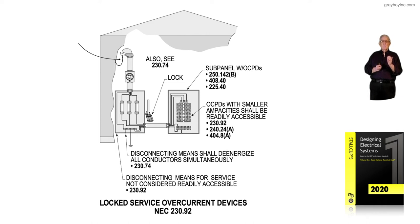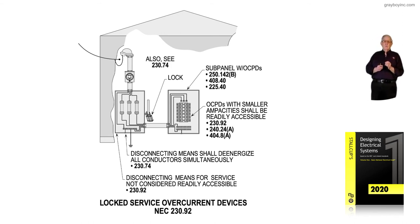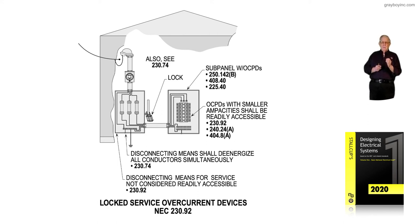The service equipment that you see locked — with the weather head and the meter supplying that particular switch — could be locked in the closed position, supplying continuous power. That way, no one could go out there and disconnect power to that facility. So what 230.92 does, it works in conjunction with the rules of 240.24A, which says those fuses do not have to be readily accessible in the service equipment that is locked.